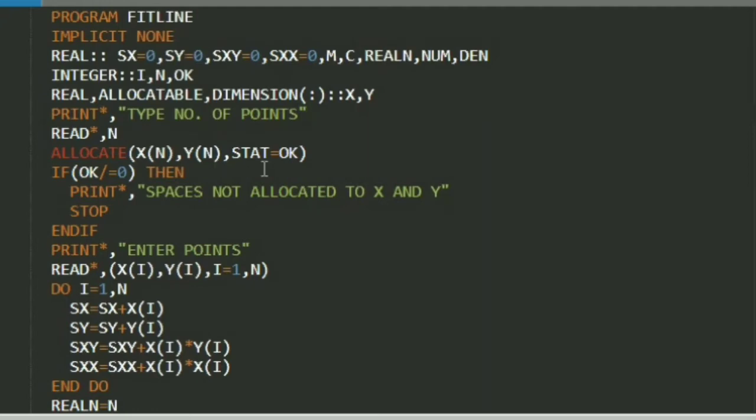After we use the allocate, we have to give the dimension to the help of the array. We also use stat equals ok. The stat is our allocation status indicator.